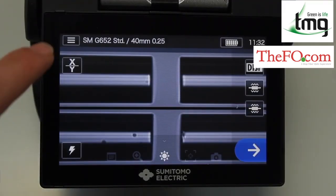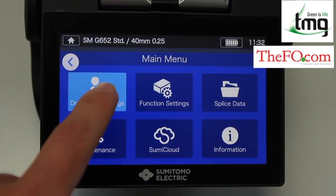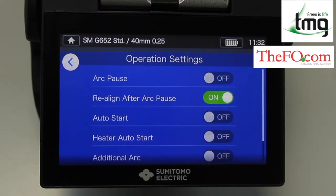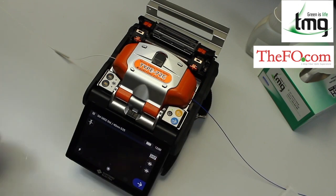So now let's show you how to do this in automatic mode. We go back into the menu and in the operational settings I'm going to take arc pause off so it naturally jumps straight into an arc test, and put auto start on and heater auto start on. So now it's already in automatic mode, all I need to do is shut the lid.